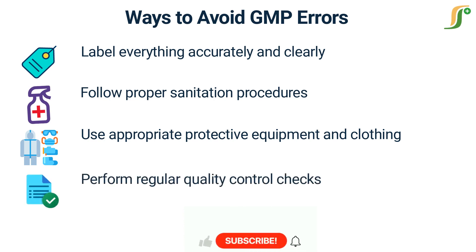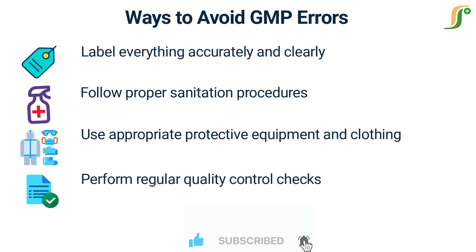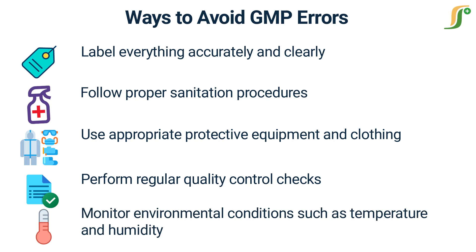Perform regular quality control checks. Regular quality control checks are essential for ensuring product quality and safety. This includes conducting tests and inspections at various stages of production, as well as conducting final inspections to ensure that products meet all specifications and requirements. Monitoring environmental conditions such as temperature and humidity is critical for ensuring product stability and safety. This includes monitoring and controlling temperature and humidity levels throughout the manufacturing process, as well as conducting regular environmental monitoring to ensure that conditions remain within acceptable ranges.